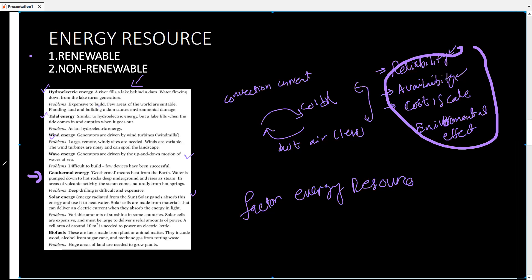For solar energy, the variable amount of sunshine in some countries is a disadvantage. Solar cells are expensive and must be large to deliver a useful amount of solar power — a huge area is required to use them as an energy resource. For biofuel, large areas of land with plants are needed to grow enough biomass for decomposition and creating biogas.